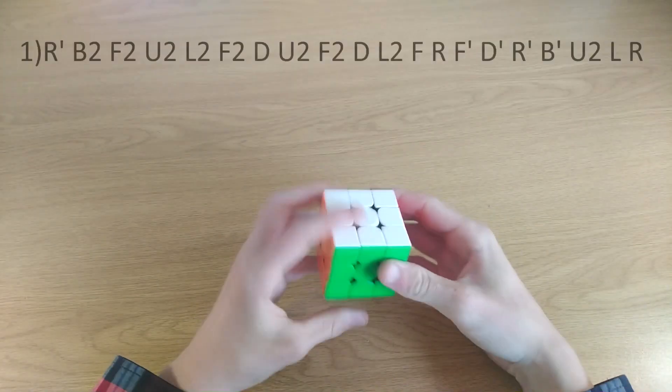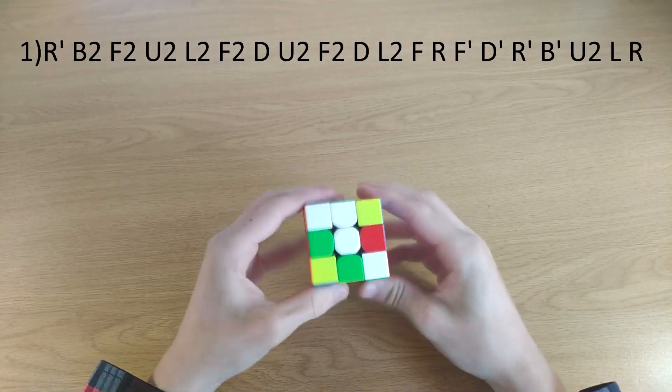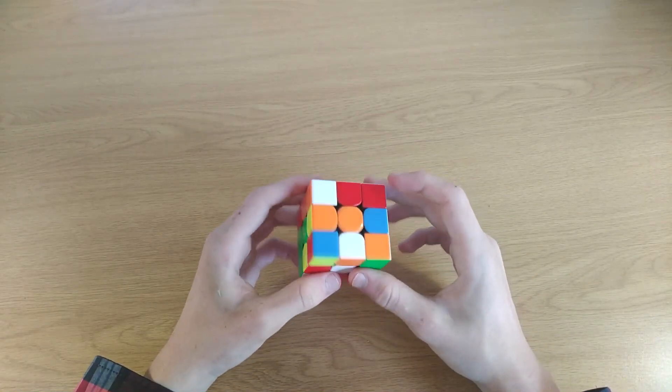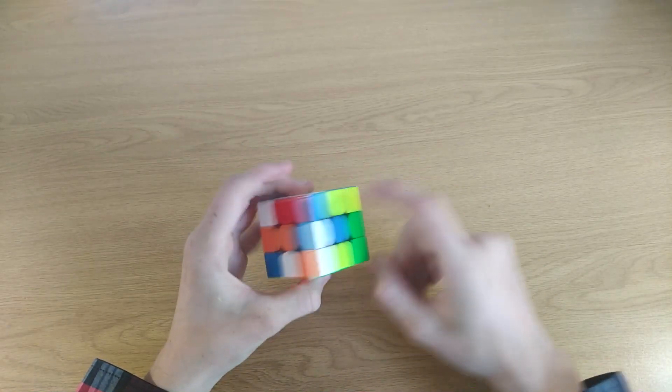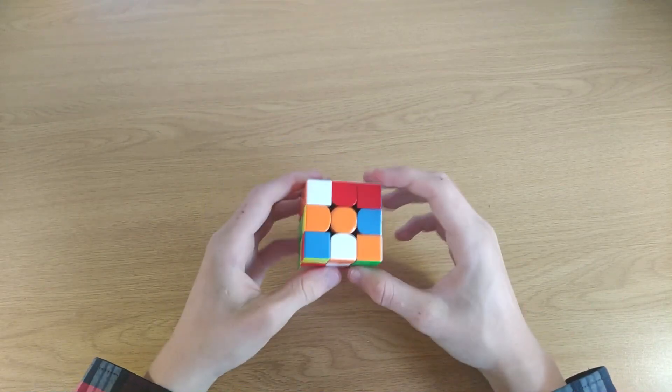The scramble is right here. Okay, now what we could have done here is, oh just a note, I'm using the FMC notation. So this is F, this is R, this is B, this is L, this is D, and this is U. So let's start.